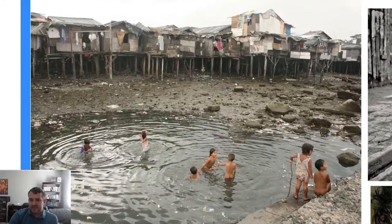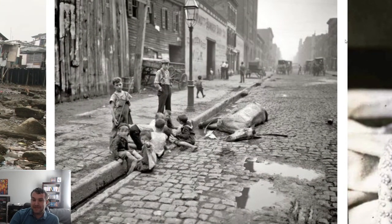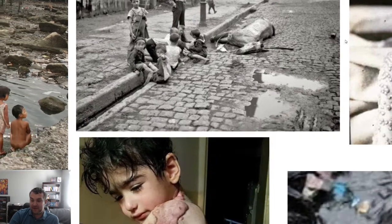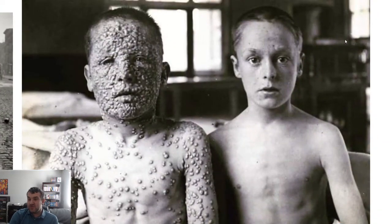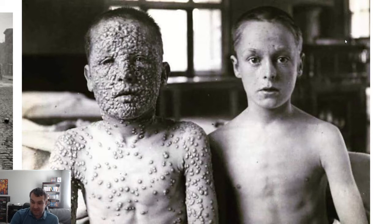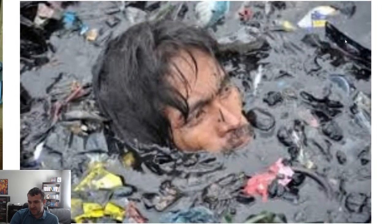Here's some kids in a slum in India — not looking really great. Here's people living in tenement conditions, also not ideal. This is a family of seven people in one room. And here's some kids playing with a dead horse. The past was rough. Here's a kid with some kind of crazy skin disease. And here are two twin brothers — one of them got smallpox, and the other did not. Smallpox has been the most deadly disease in human history — a terrible, terrible disease. And here's a guy who's swimming in garbage.